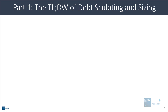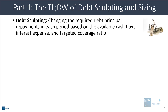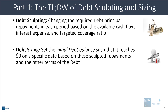Let's start with the short version. Debt sculpting means that you change the required debt principal repayments in each period based on the available cash flow, the interest expense, and the targeted coverage ratio — it could be the debt service coverage ratio or the loan life coverage ratio or even another variant of those. Debt sizing means that you set the initial debt balance in the model such that it reaches zero on a specific date based on the sculpted repayments and the other terms of the debt, such as the interest expense.